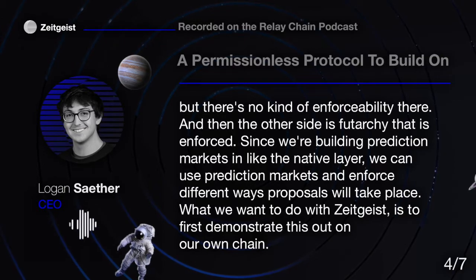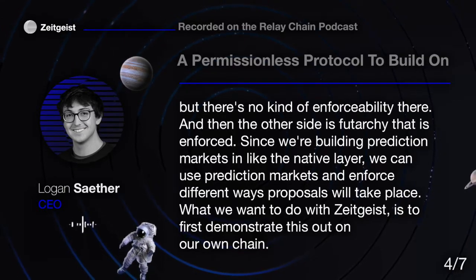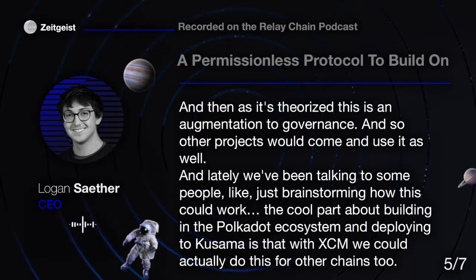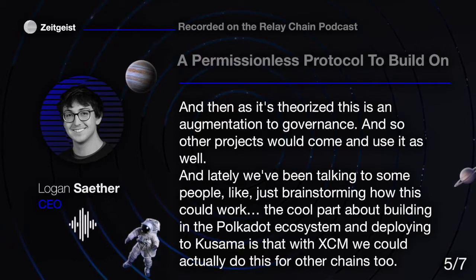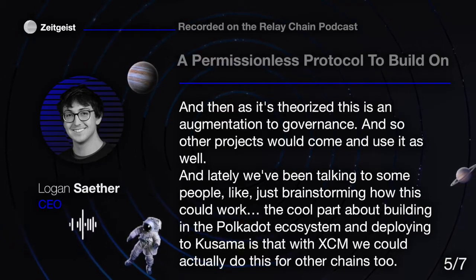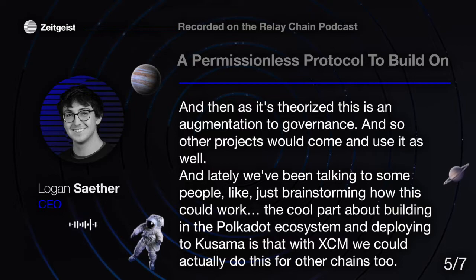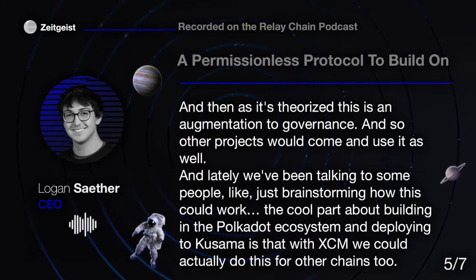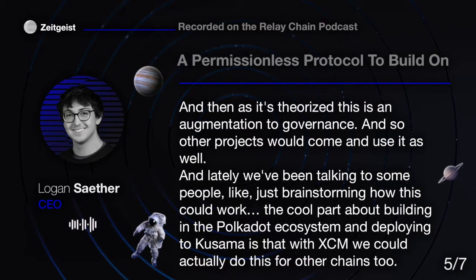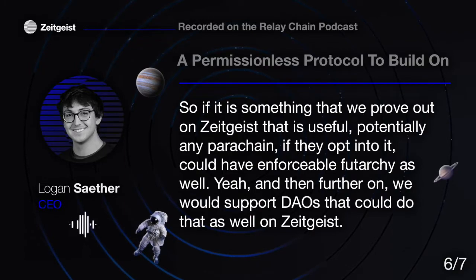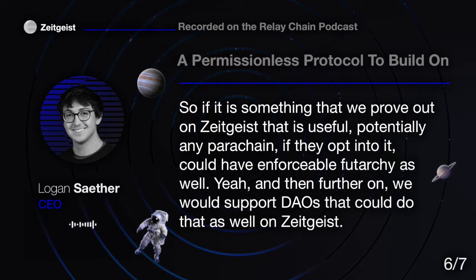What we want to do with Zeitgeist is first demonstrate this on our own chain, and then, as theorized, this is an augmentation to governance that other projects would come and use as well. Lately we've been brainstorming how this could work. The cool part about building in the Polkadot ecosystem and deploying to Kusama is that with XCM, we could actually do this for other chains too. If we prove it out on Zeitgeist, potentially any parachain that opts in could have enforceable futarchy as well.